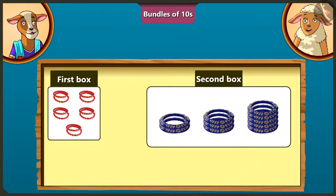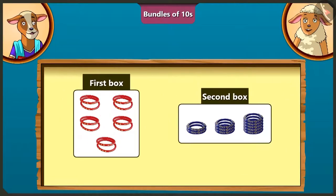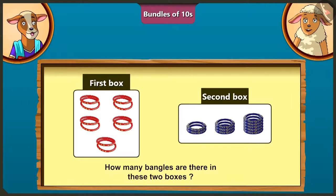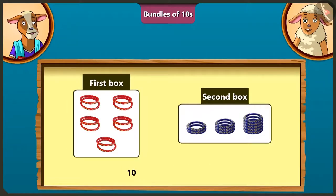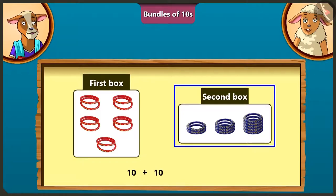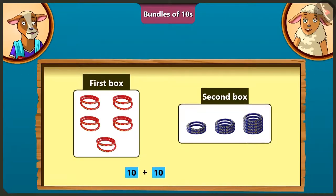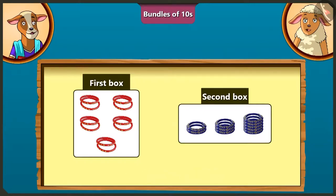Absolutely right! Now tell me, how many bangles are there in these 2 boxes? There are 10 bangles in the first box and there are also 10 bangles in the second box. So if we add 10 and 10, there will be 20. So there are total 20 bangles in these 2 boxes.